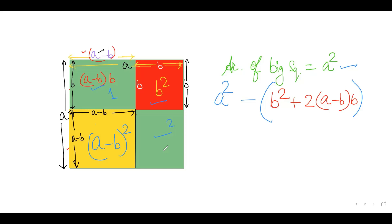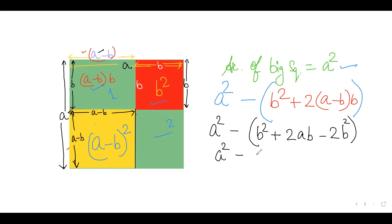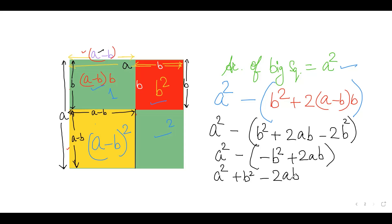Solving: a² - b² - 2(a-b)b = a² - b² - (2ab - 2b²) = a² - b² - 2ab + 2b² = a² + b² - 2ab. This matches the right-hand side, confirming that (a-b)² = a² + b² - 2ab. The yellow square area equals exactly this expression.